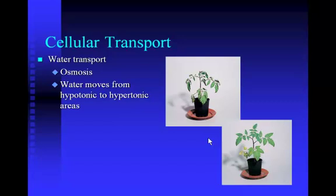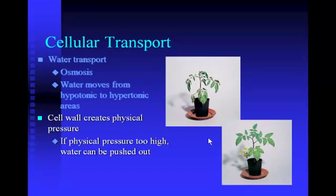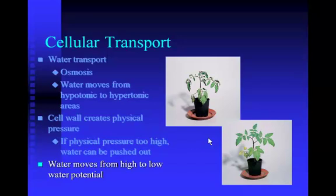The cell wall also creates physical pressure on the plant. If the physical pressure inside a plant cell is too high, the cell wall can actually force the water back out of the plant cells. Water basically moves from an area of high water potential to low water potential — wherever the concentration of water is higher, water moves to an area where the concentration of water is lower and you have a lower water potential.